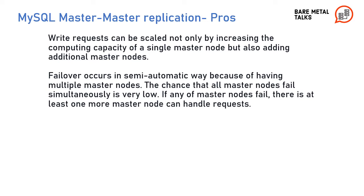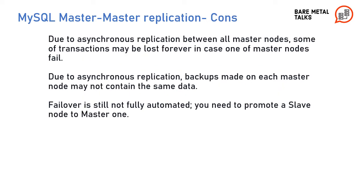Failover occurs in a semi-automatic way because of having multiple master nodes — the chance that all master nodes fail simultaneously is very low. If any master node fails, there is at least one more master node that can handle remaining requests. Cons of Master-Master Replication: due to asynchronous replication between all master nodes, some transactions may be lost forever if one master node fails. Backups made on each master node may not contain the same data. Failover is still not fully automated — you need to promote a slave node to master.